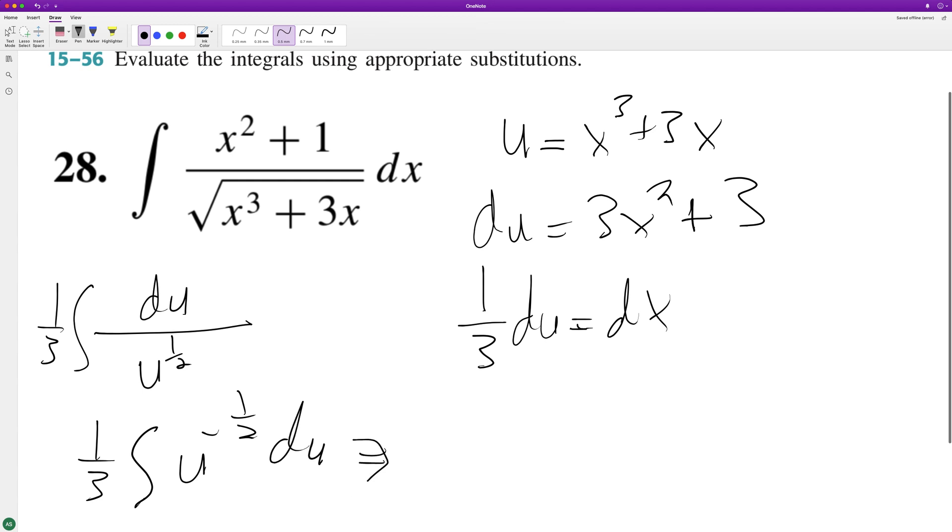So if we integrate this, what we end up with is one third u raised to the negative one half plus one, so one half. Divide through by one half, same thing as multiplying by two. So we end up with two thirds u raised to the one half plus c.